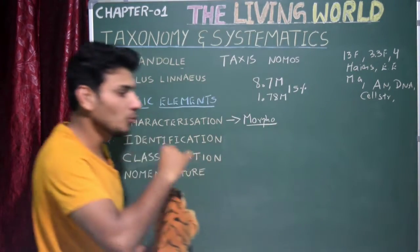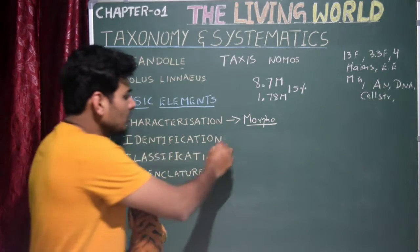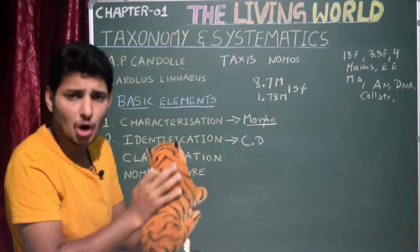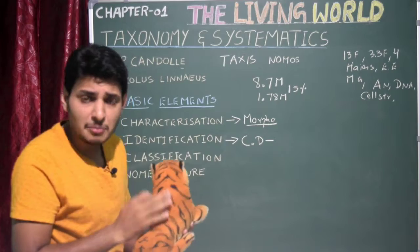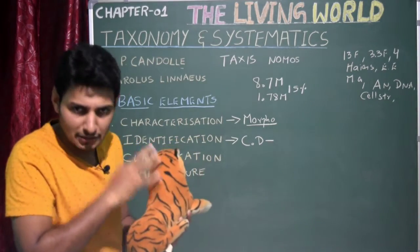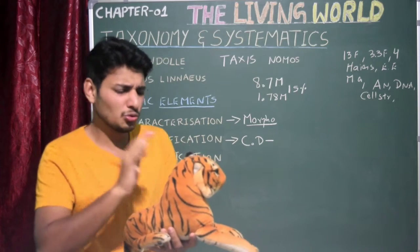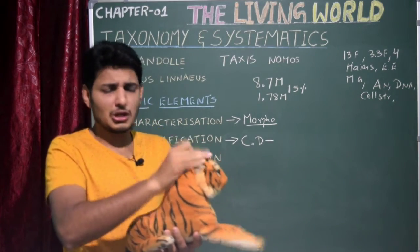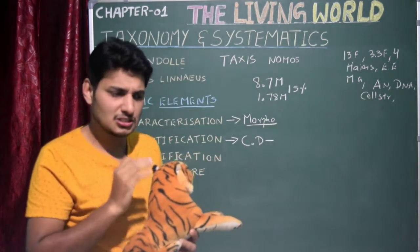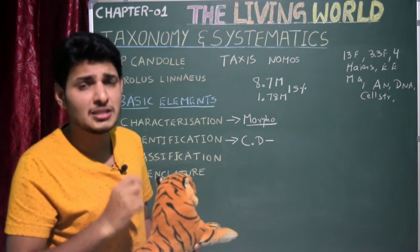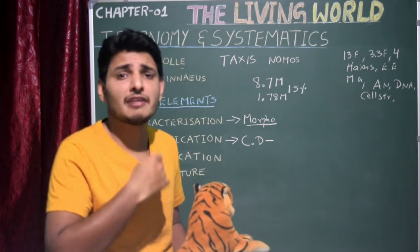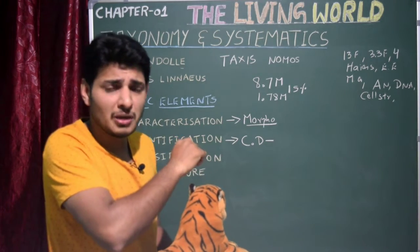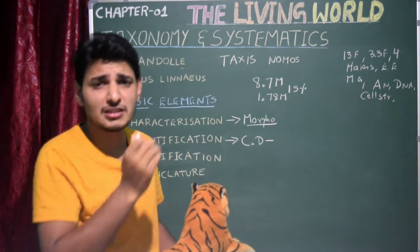Identification is the correct description — giving a character description of an organism to know what organism a name is attached to. To know which organism most resembles in characters, I compare it with organisms already described in a reference book. That particular book is called a dichotomous key, which is one of the taxonomical aids we will study in the next classes.